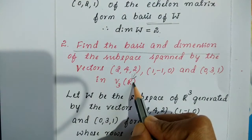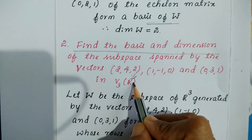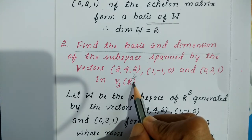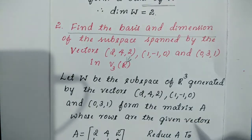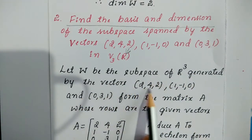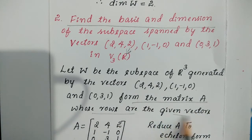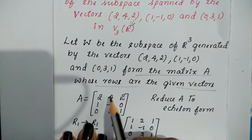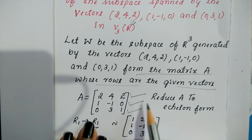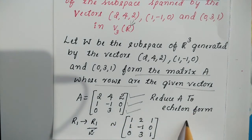Here we are working over R (real numbers), so there is no need to convert negative values to positive like in Z3. Let W be the subspace of R³ generated by the vectors (2,4,2), (1,−1,0), and (0,3,1). Form matrix A with these vectors as rows, then reduce A to echelon form.